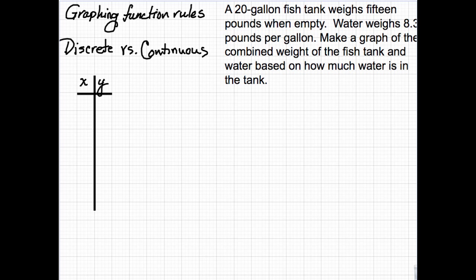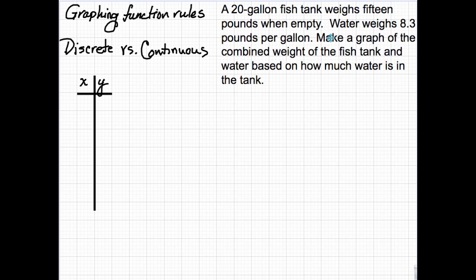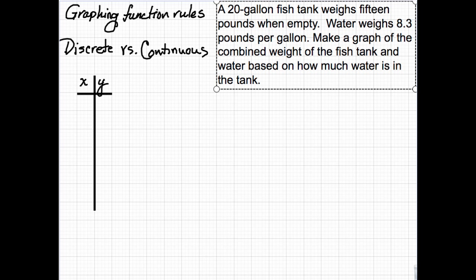Let's now take a look at a continuous graph. Now in this, we've got a 20-gallon fish tank, and it weighs 15 pounds when it's empty. Water weighs about 8.3 pounds per gallon. And we want to make a graph of the combined weight of the fish tank and the water based on how much water is in the tank.